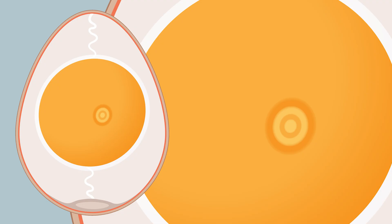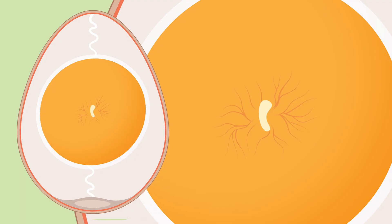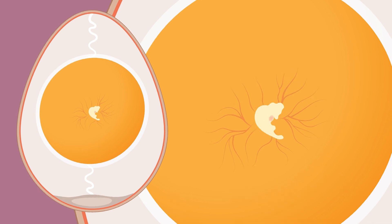Day 1: visible tissue development. Day 2: tissue development very visible, appearance of blood vessels. Day 3: heartbeat begins, blood vessels very visible.